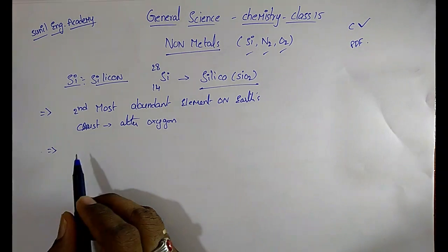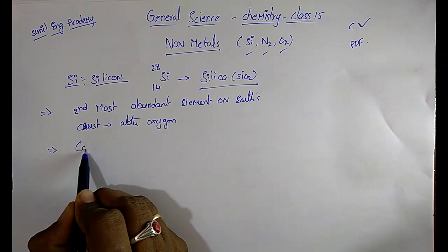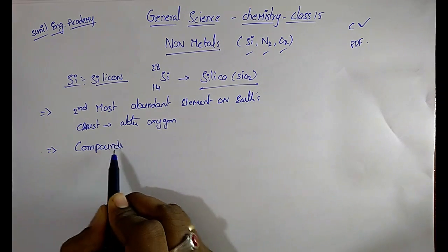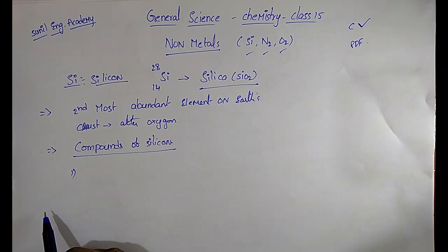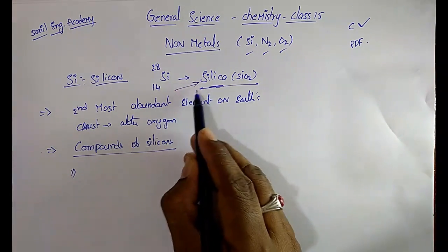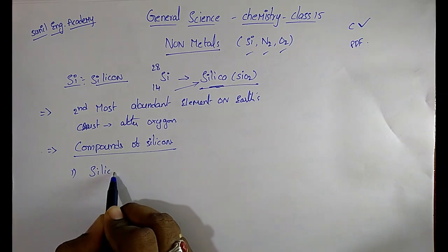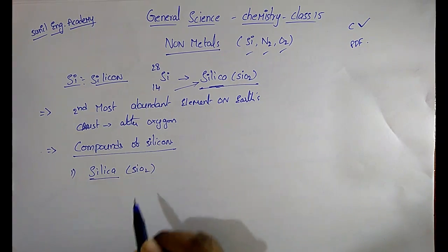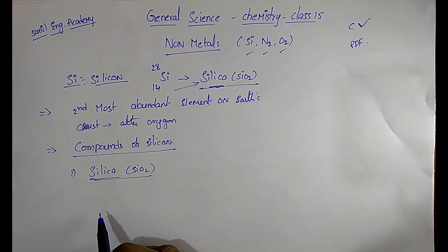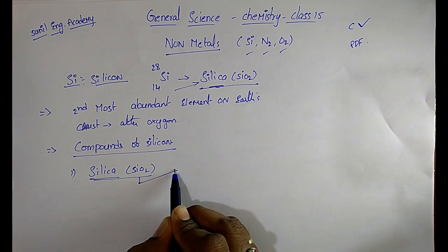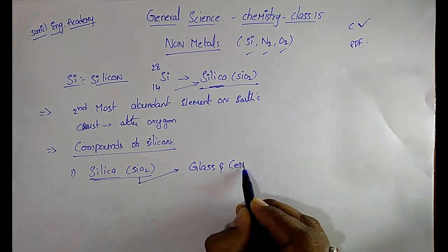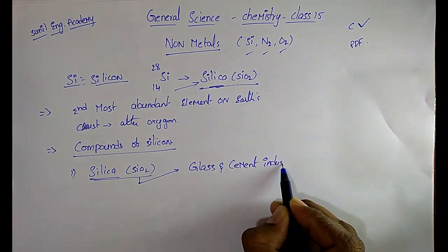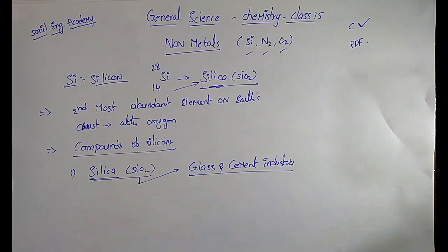The very important compounds of silicon — the first important compound is silica, that is silicon dioxide SiO2. Silica is used for manufacturing of glass and also in cement industries.